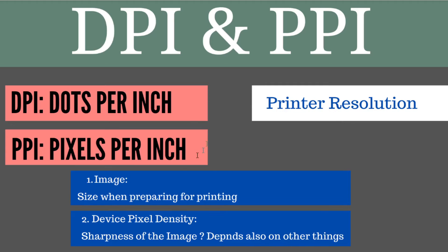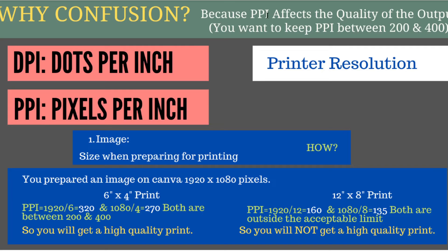No matter how high the PPI of the image is, the sharpness you see will depend on the device. Now let's discuss why there is confusion between PPI and DPI — it comes from the relationship between printer resolution and image size. PPI also affects the quality of the printed output, and the recommended value of PPI is between 200 and 400. When preparing any image for printing, we look at PPI.